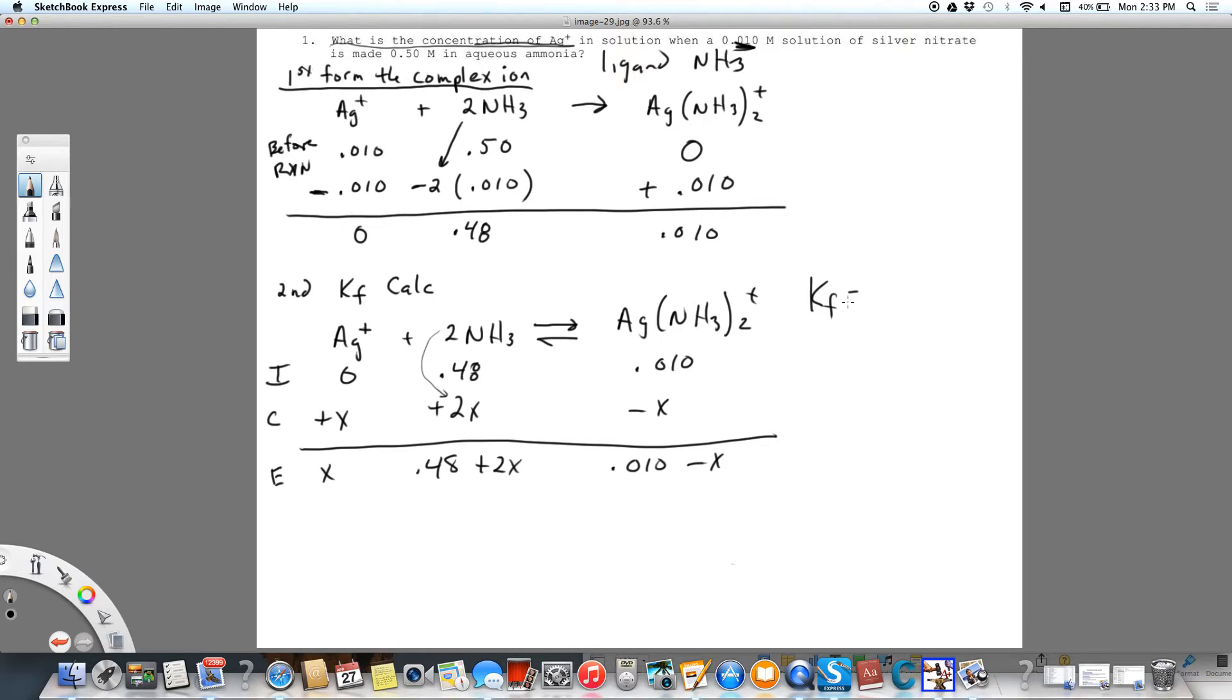Again, the reason why we did this in two steps is to help us with the math to determine what our concentrations are. Okay, so Kf, which is given in a table, is going to be the concentration of the complex over the concentration of silver. This is not Ksp, this is Kf, so there will be all species in solution and that's going to be times ammonia or on the bottom ammonia squared.